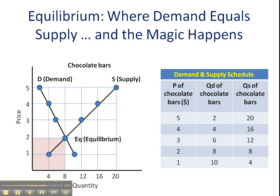Now let's see what happens when we decrease supply. We've seen a left shift of the supply curve from S to S1, and a change in equilibrium from EQ to EQ2. Our new market price is going to be about $2.60, and our market has sold fewer chocolate bars — it looks like about 7. This is how we graph a decrease in supply: the impact is to increase the market price and decrease the quantity sold. In our next video, we're going to look at what happens when we've got simultaneous changes in supply and demand.